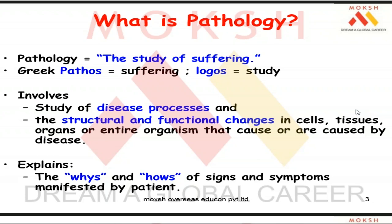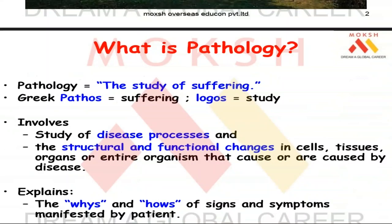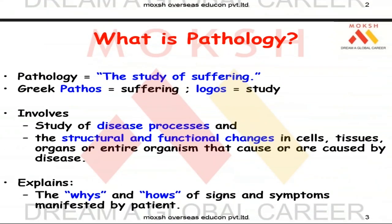The only good doctor will know pathology, and the only pathology doctor will be good. The father of modern pathology was Rudolf Ludwig Virchow, who told the world around 500 years ago that whatever disease process exists in this world begins at the level of the cell. That gave birth to what is called cellular pathology.